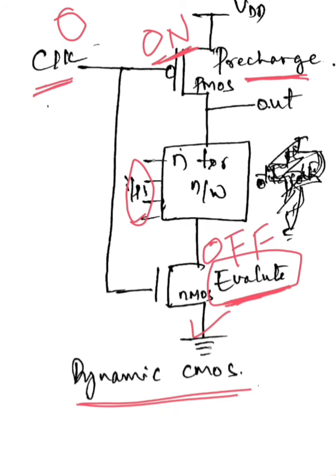It will make contact to the VDD terminal and the output terminal, so that the output capacitor is going to charge. This is how the dynamic CMOS logic is going to work.